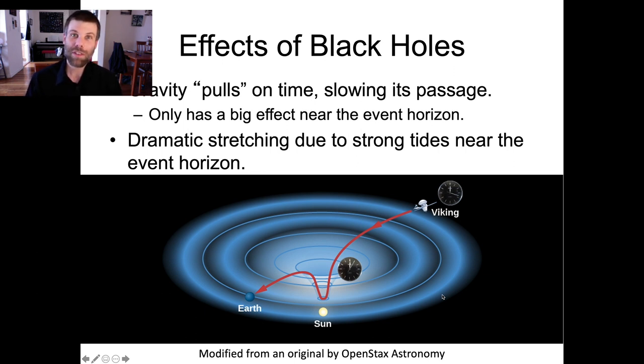So imagine if, on our previous example, the crew on that spaceship had mutinied against the commander and said, no, we're not going inside a black hole, you're nuts, and they threw the commander out of the spaceship towards the black hole. So as the commander starts falling towards the black hole, her feet are going to be closer to the black hole than her head will be, so they're going to experience just a little bit more gravity down here than up here